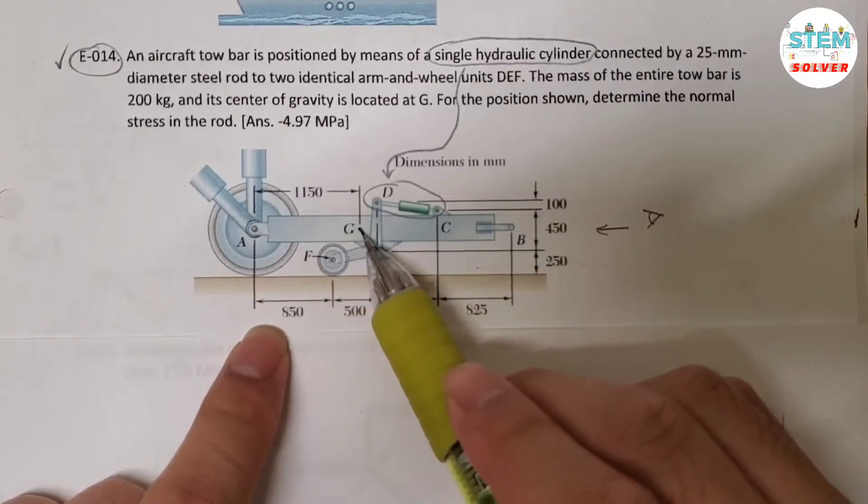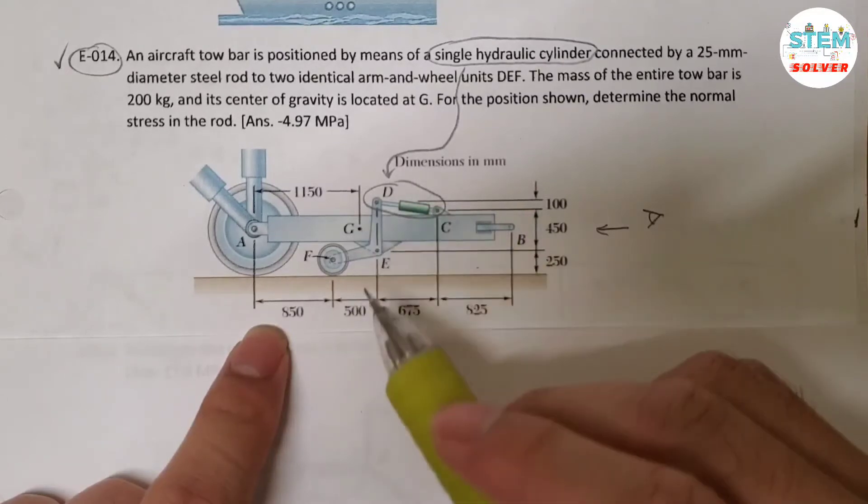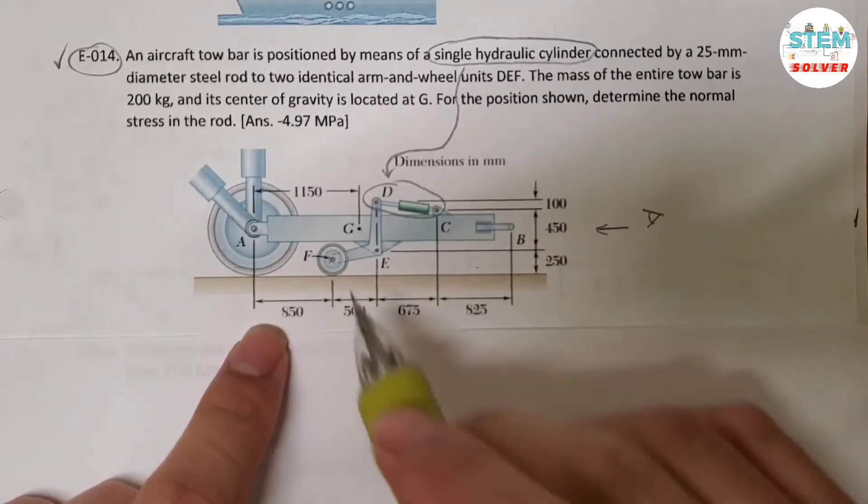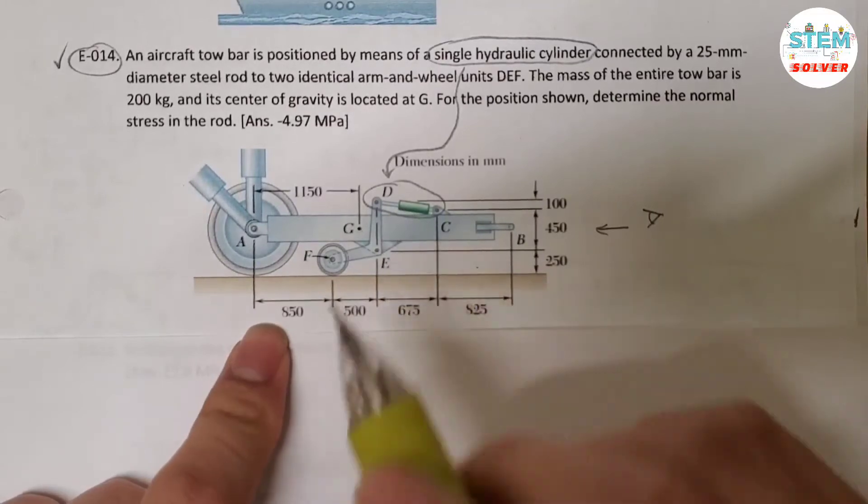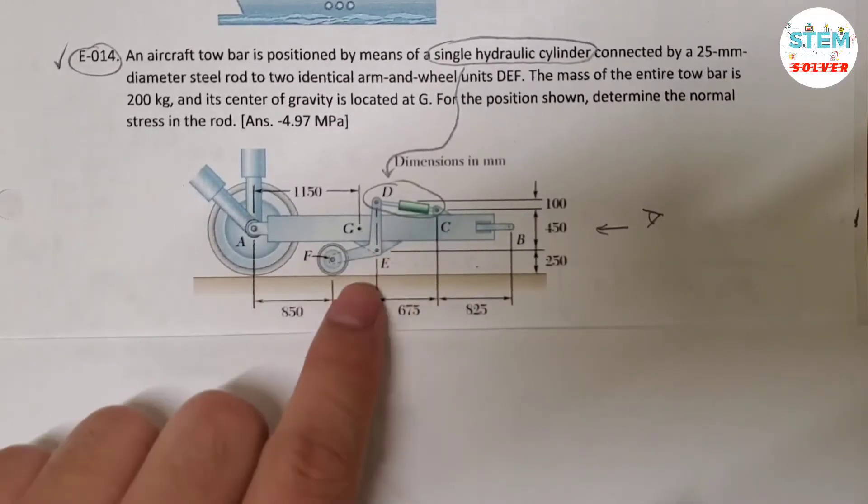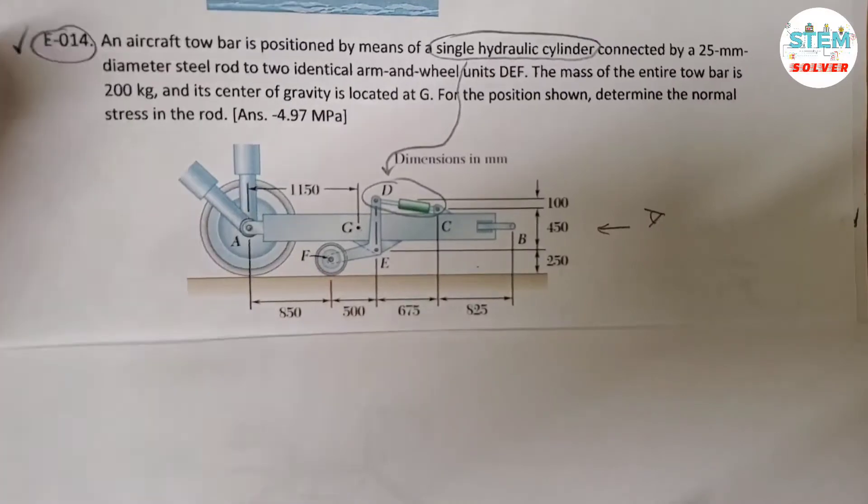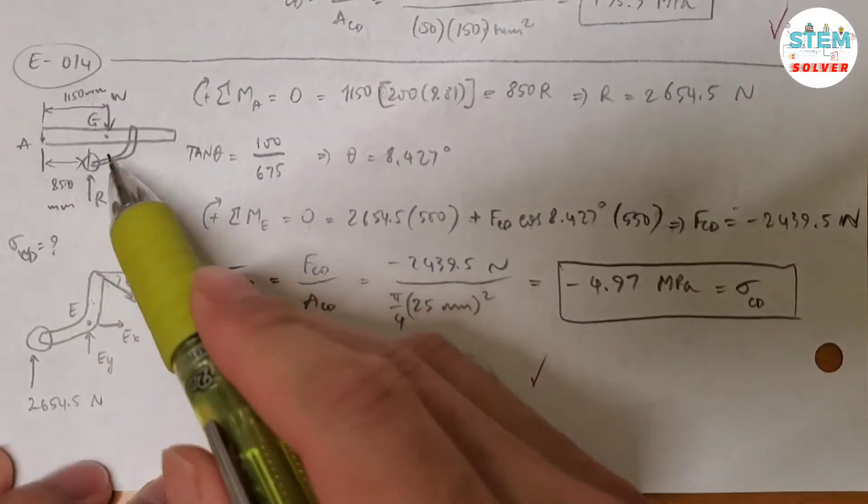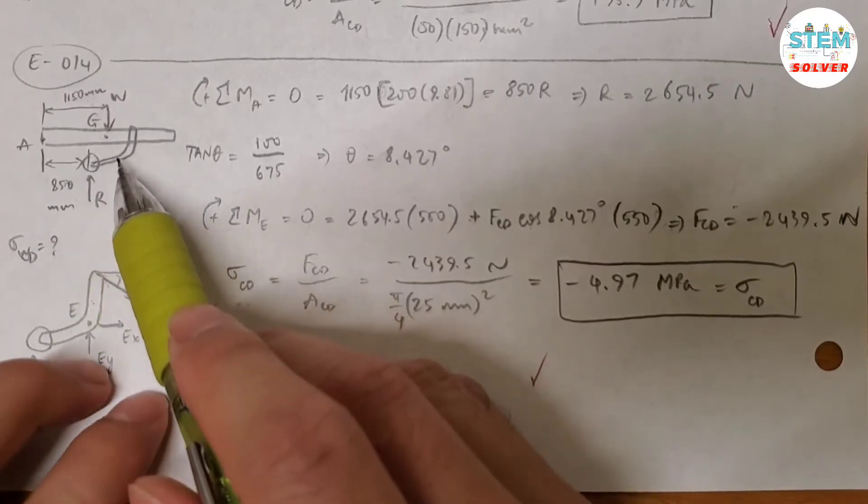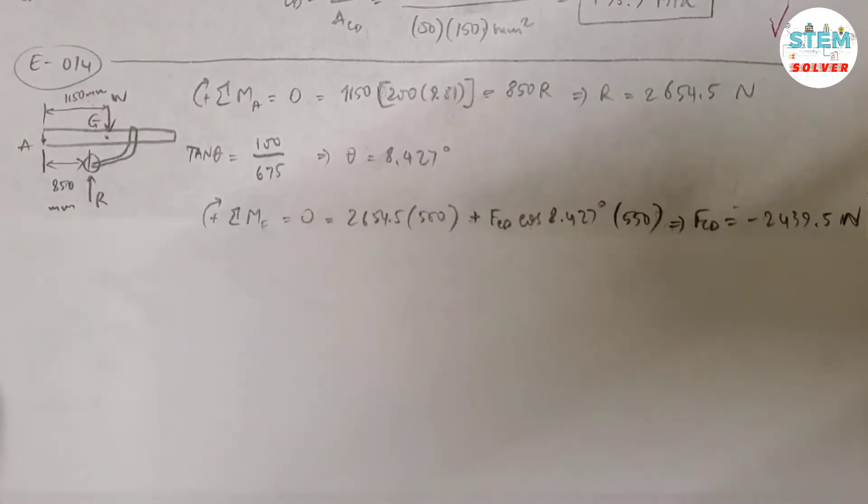And this is the center of mass of the tow bar. Now you've asked to find the normal stress in this hydraulic cylinder. So let me bring this, let me turn this into a free body diagram. So doing that I got this one.